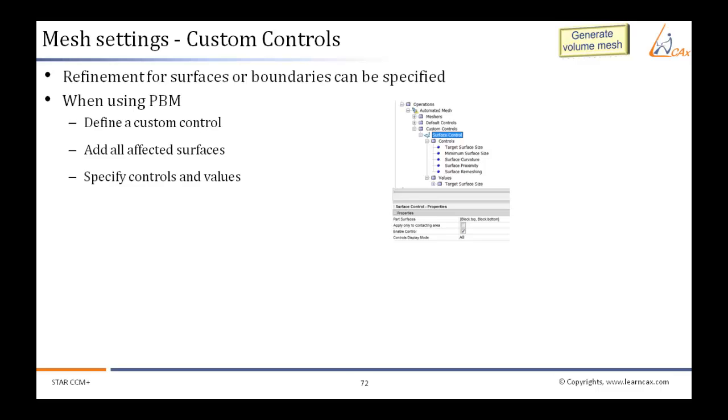There are two methods to introduce custom control depending upon which meshing method we use. If we are using part-based meshing, we have to define a custom control, add all affected surfaces, and specify controls and values.